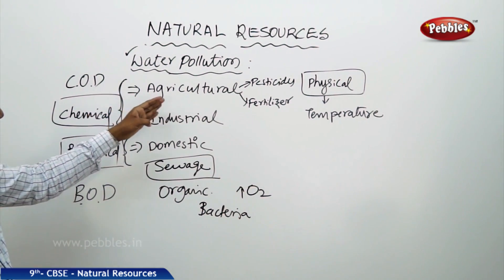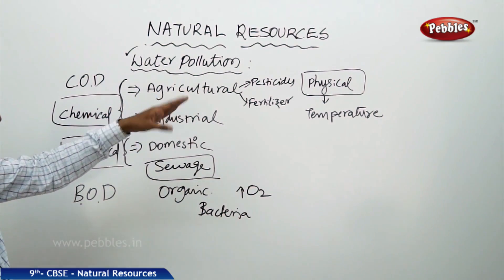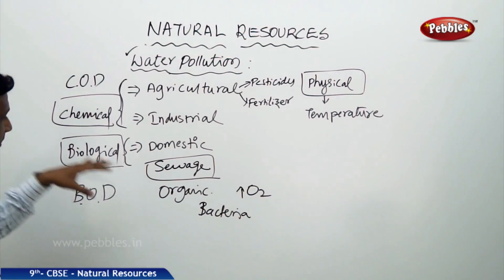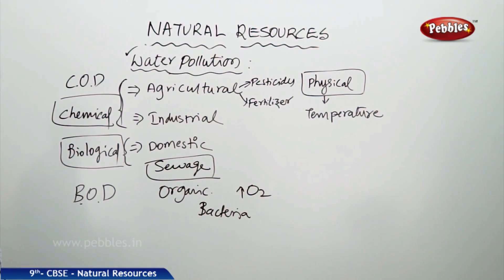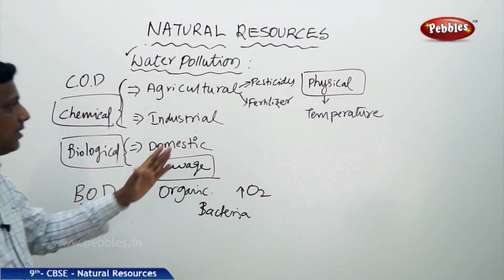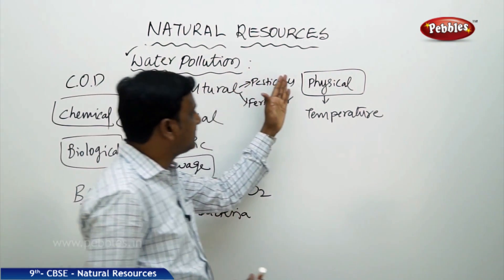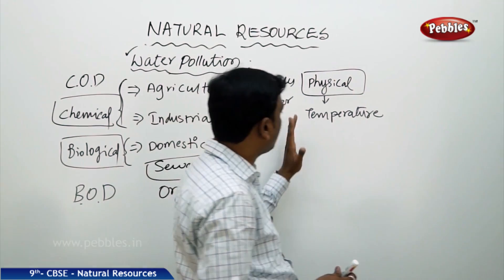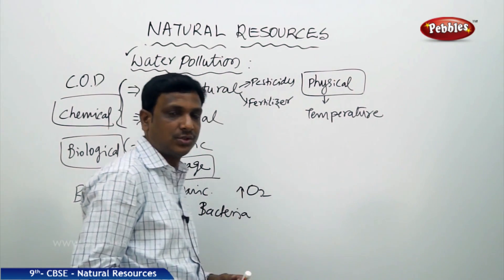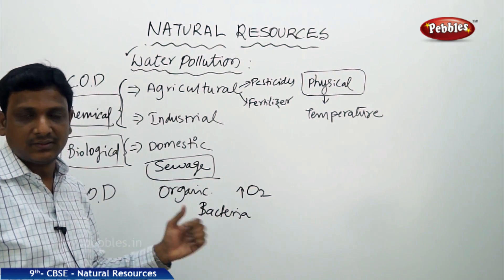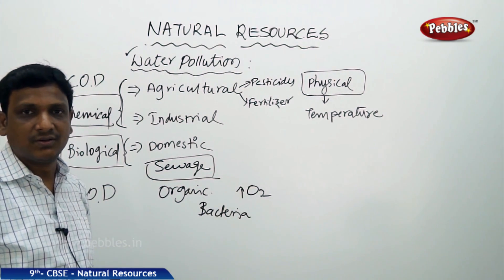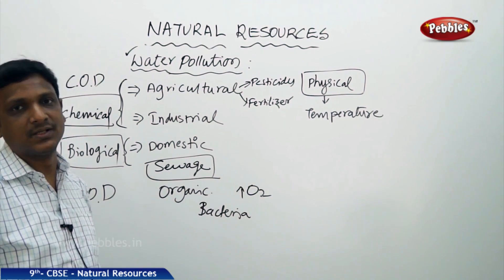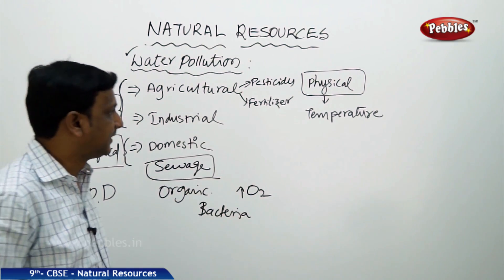So to summarize, agricultural sources include pesticides and fertilizers; industrial sources include chemicals and effluents; and organic matter represents the biological source. Now let us look at the physical aspects that cause damage to the quality of water and to the life living in the water. The physical factor is temperature.